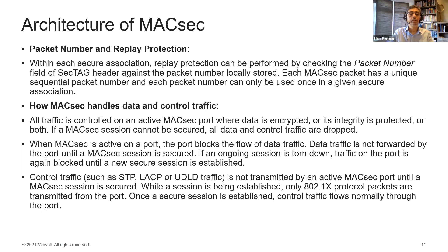How does MacSec handle data and control traffic? All traffic is controlled on an active MacSec port where data is encrypted, its integrity is protected, or both. If a MacSec session cannot be secured, all data and control traffic are dropped. When MacSec is active on a port, the port blocks the flow of data traffic — data traffic is not forwarded until the MacSec session is secured. If an ongoing session is torn down, traffic on that port is again blocked until a new secure session is established.